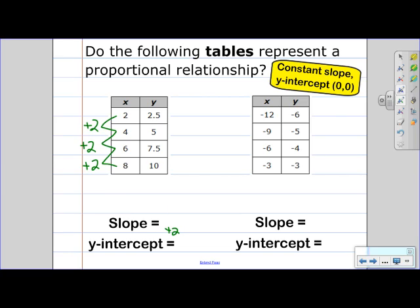Now for y. Going from 2.5 to 5 is plus 2.5. From 5 to 7.5 is plus 2.5. And from 7.5 to 10 is plus 2.5. So the change in y is plus 2.5.